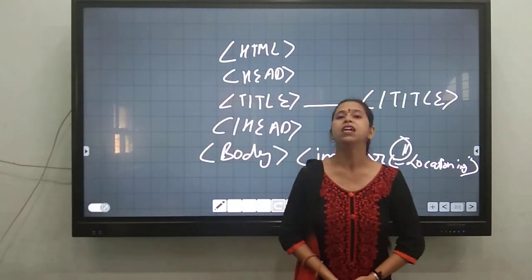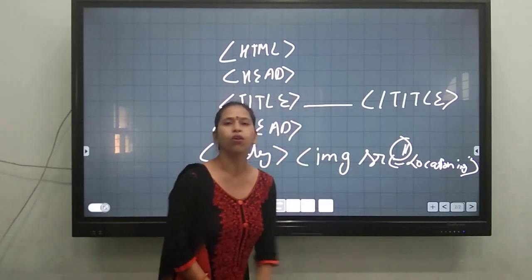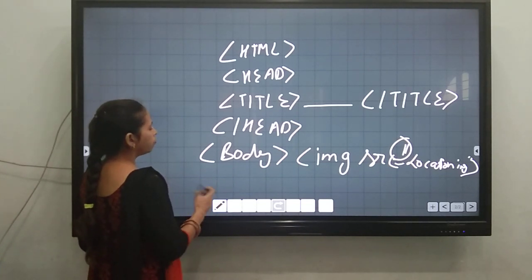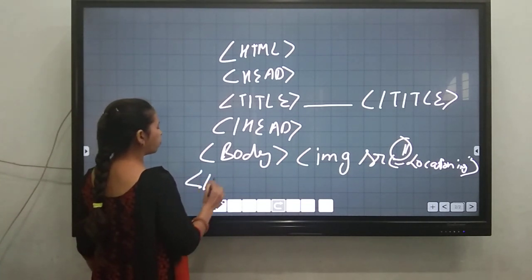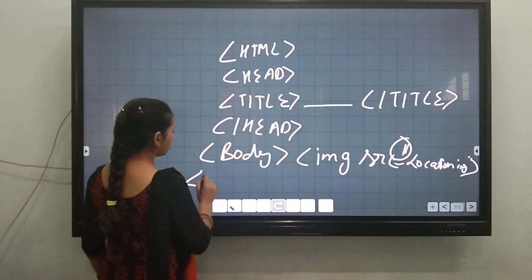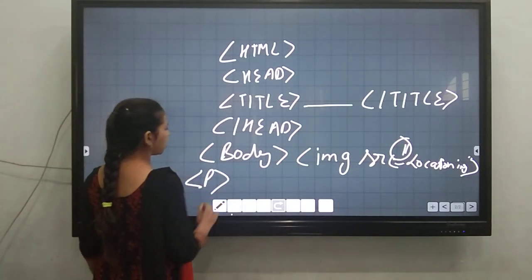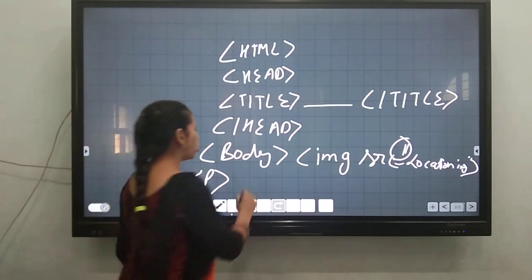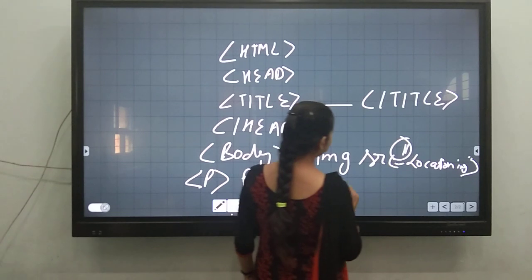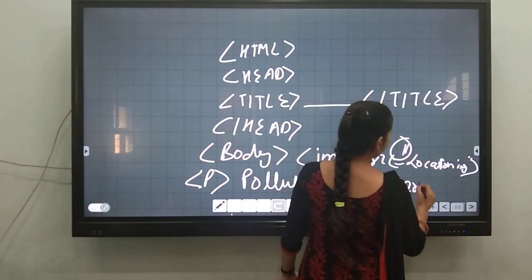Your location should be inside the double quoted sign and then you will close the tag of img src. Afterwards, we will close the body. After that, we will write the paragraph. The paragraph was: 'Pollution is dangerous for human being.'